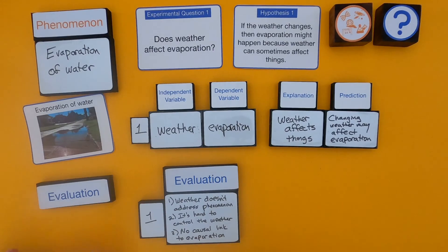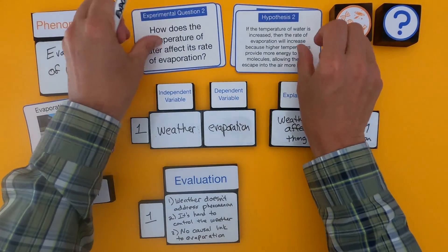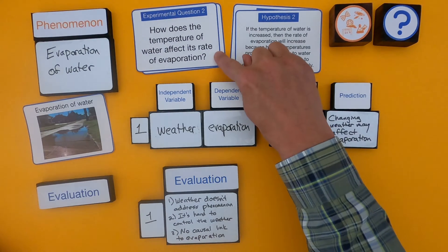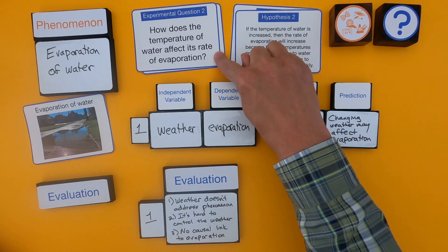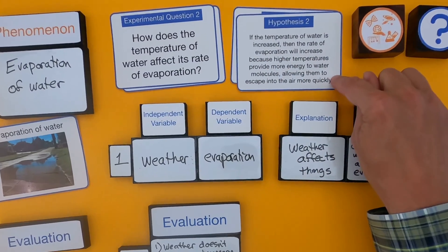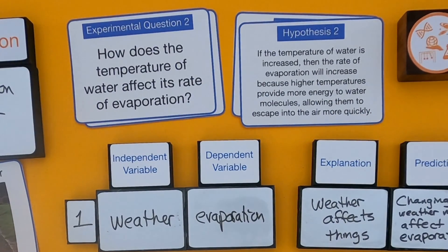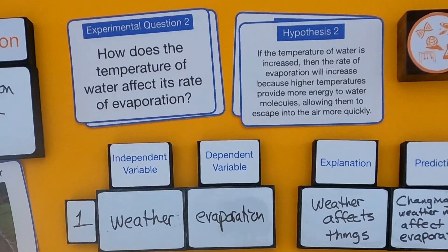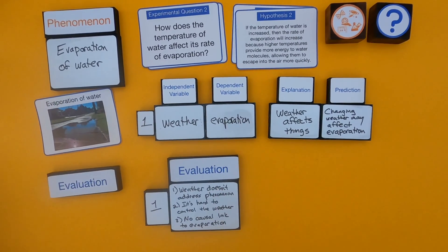Now let me do that with a second question. The question is: how does the temperature of water affect its rate of evaporation? And then the hypothesis says: if the temperature of water is increased, then the rate of evaporation will increase because higher temperatures provide more energy to water molecules, allowing them to escape into the air more quickly.